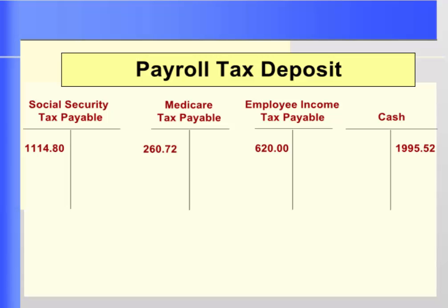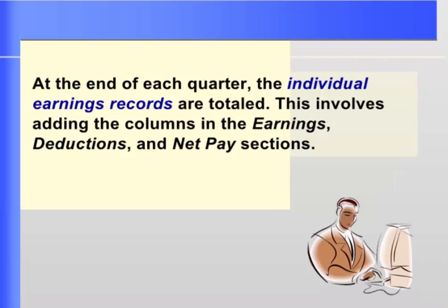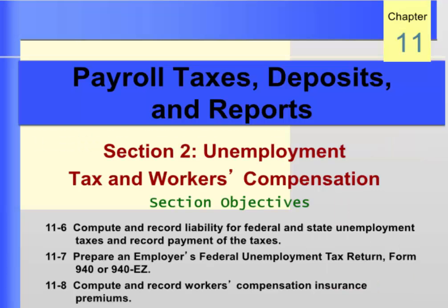The entry to record the payment of tax can be made in the general journal or the cash payments journal. Individual earnings records are updated at the end of each pay period using information in the payroll registers. Remember to cross-foot the totals to ensure that earnings less deductions equals net pay. Section 2 discusses unemployment tax and workers' compensation. Objective 6 covers how to compute and record liability for federal and state unemployment taxes and record payment of those taxes.